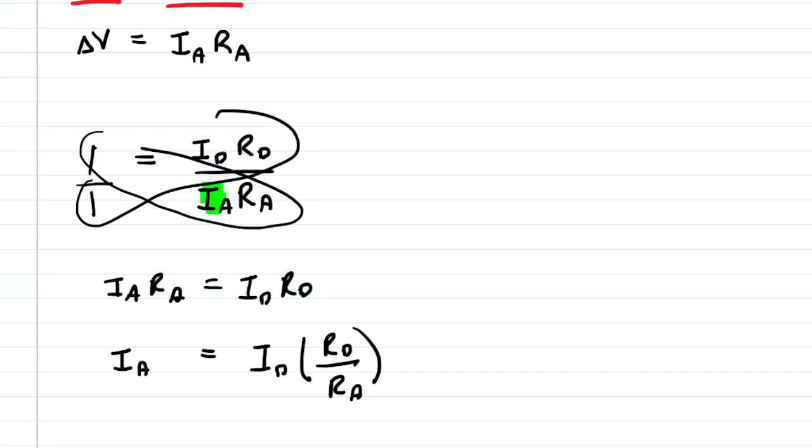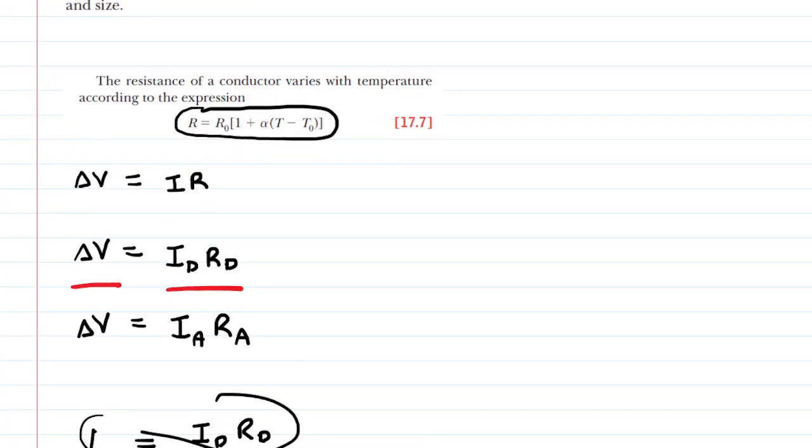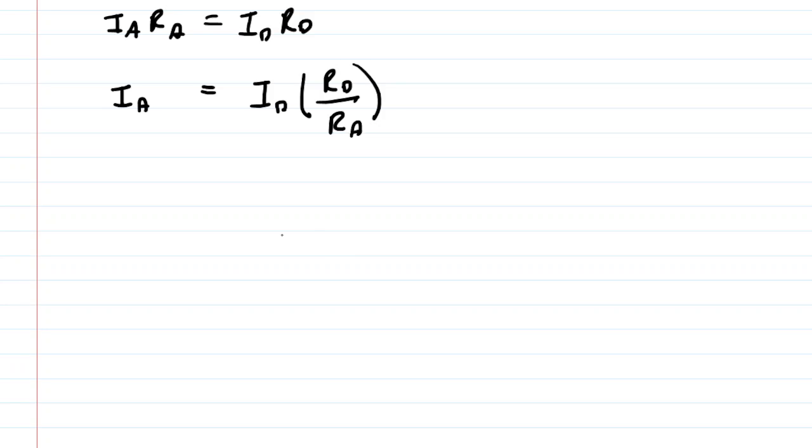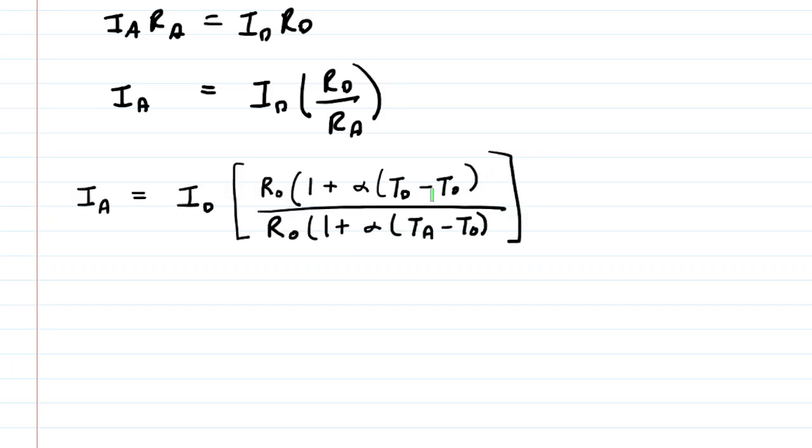What we're going to next do for these resistances is go back up to the resistance equation that is circled on your screen, and we're going to be plugging in the particular expression. So we can see that the resistance equals this expression right here. We're going to go ahead and plug that in for the resistance in Death Valley and that in Antarctica.